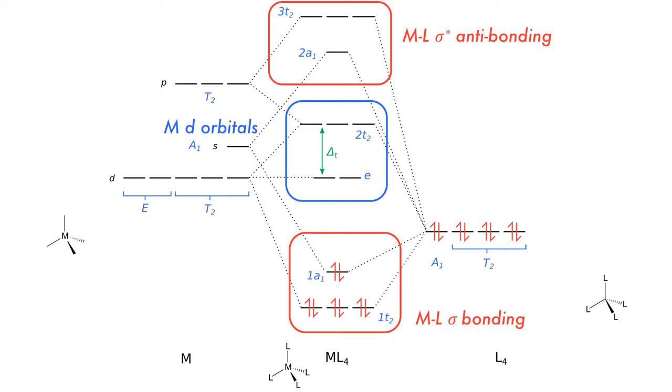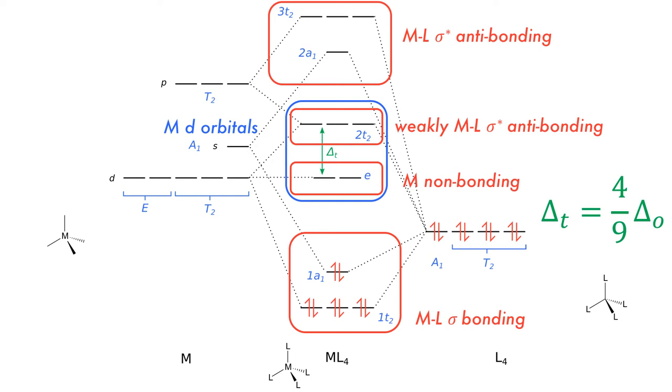The DZ squared and DX squared minus Y squared orbitals are strongly non-bonding in a sigma only tetrahedral complex. The T2 set increase in energy mostly due to the configuration interaction and are weakly metal ligand sigma star. It is so weakly antibonding that the splitting delta tetrahedral is less than half of the splitting of an octahedral complex.